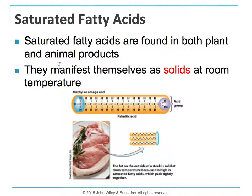Saturated fatty acids are found in both plant and animal products and manifest as solids at room temperature. Most saturated fatty acids are found in animal products, but some plant products like coconut oil contain very high levels of saturated fats. For example, the fat on the outside of a steak is solid at room temperature because it's high in saturated fatty acids.